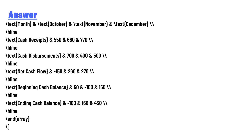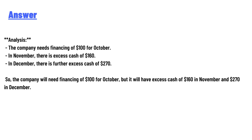Based on the cash budget analysis: net cash flows and beginning balances are calculated for October, November, and December. The company needs financing of $100 for October. In November there is excess cash of $160, and in December there is further excess cash of $270.